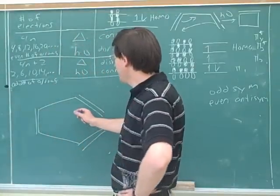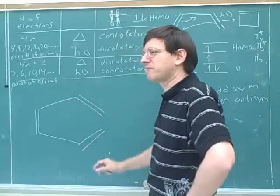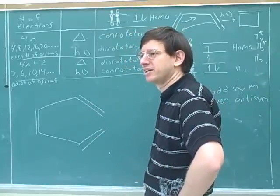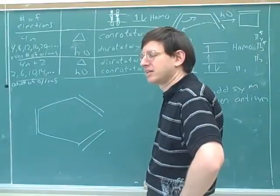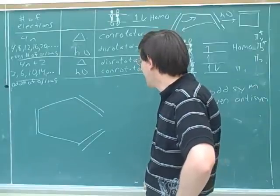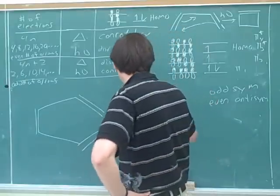Now, the other common example is when we have three pi electrons. Right? How many pi molecular orbitals would there be here? Six. But that's a lot of pictures to draw. Three.